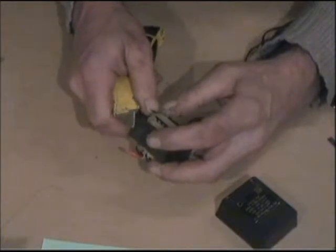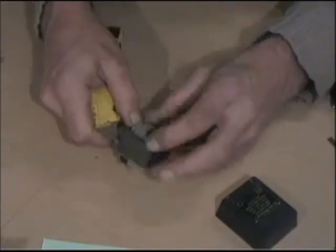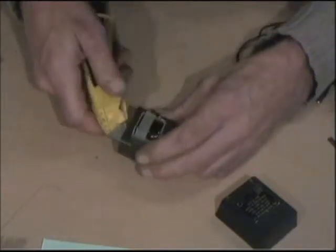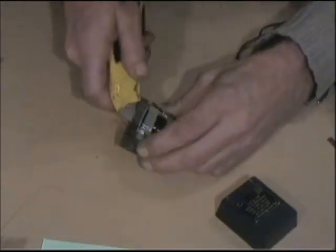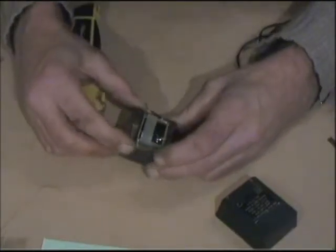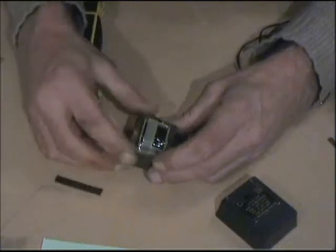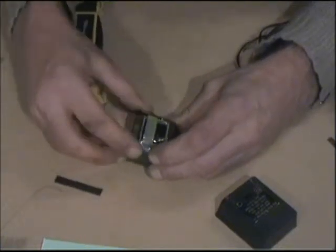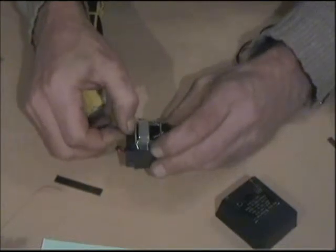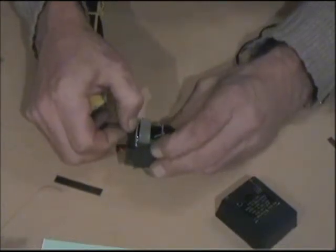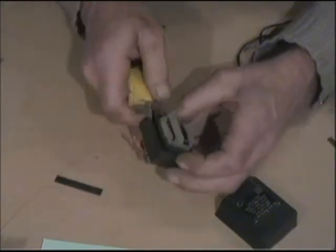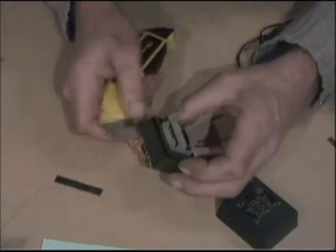If you lift up one of the corners and bend it up slightly, you can get some pliers on there. As you can see, it's starting to fall apart already. Start pulling these laminations out. You might need pliers or pipe grips to get the first one out. Once you get going, work your way down.